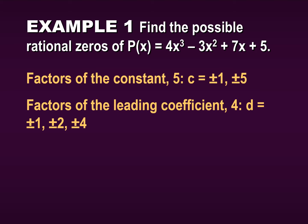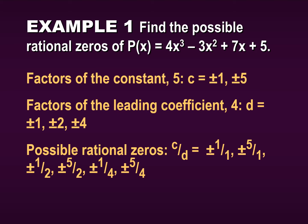Factors of the leading coefficient 4 are plus or minus 1, plus or minus 2, and plus or minus 4. So our possible rational zeros, which we'll represent as c over d, are: plus or minus 1 (from 1 over 1), plus or minus 5 (from 5 over 1), plus or minus 1 over 2, plus or minus 5 over 2, plus or minus 1 over 4, and plus or minus 5 over 4. You do every single possible scenario.